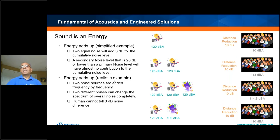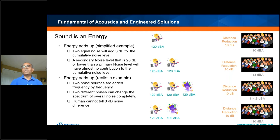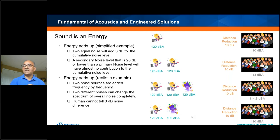Realistically, noise sources are added frequency by frequency — each frequency adds to the other source's frequency, producing a complex result. Two different noises can change the spectrum even if the overall level appears unchanged. In our industry, we follow the simplified rule. The difference in spectrum means the character of the sound changes even when overall dB appears similar.